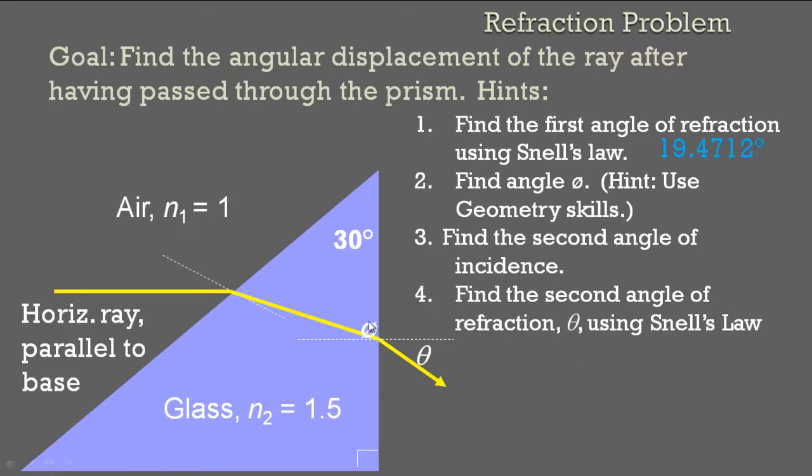Plug that into our formula and you get this. Now we need to find this angle in here. If this angle is 19.4712, we can find this angle easily using geometry. Don't worry, I'll make these problems a little easier whenever we're doing them in class. To find this second angle of incidence, which is this guy right here, which would be 90 minus this, and you get 10.5288. And now that we have that, finding this angle is easy. You get 15.9. I'll do a problem like this in class. Sorry I didn't work this one out.